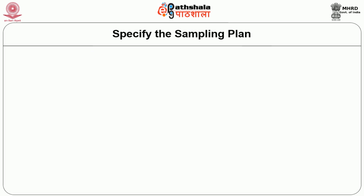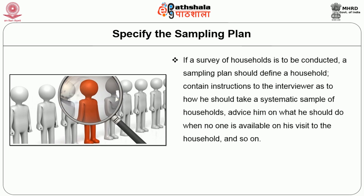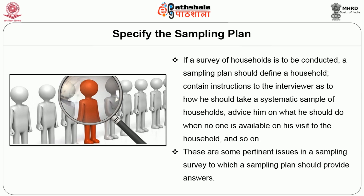Step 6: specify the sampling plan. This means indicating how the decisions made so far are to be implemented. For example, if a survey of households is to be conducted, a sampling plan should define a household, contain instructions to the interviewer on how to take a systematic sample of households, and advise on what should be done when no one is available on a visit to the household. These are pertinent issues in a sampling survey to which a sampling plan should provide answers.